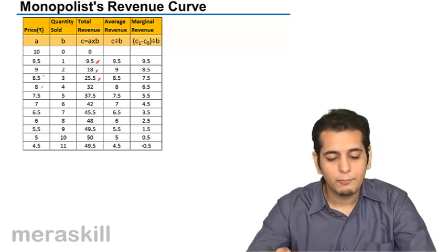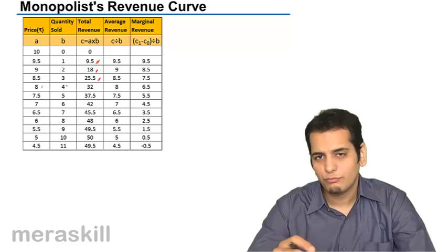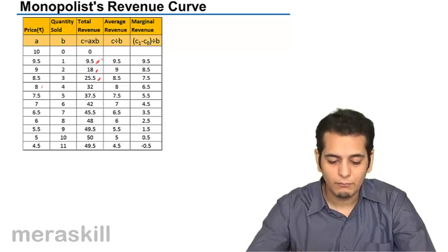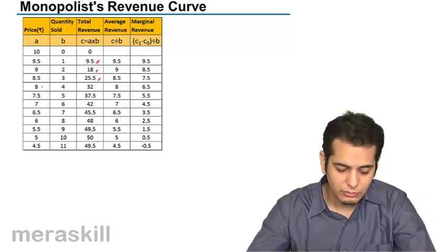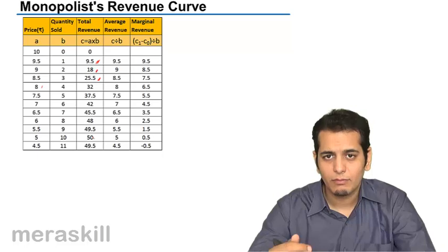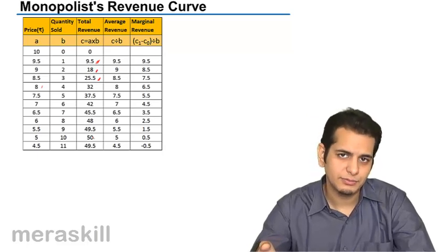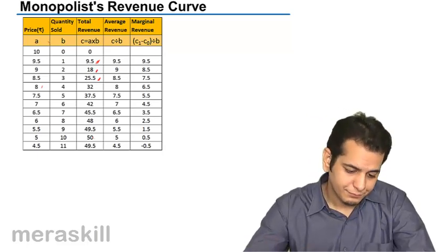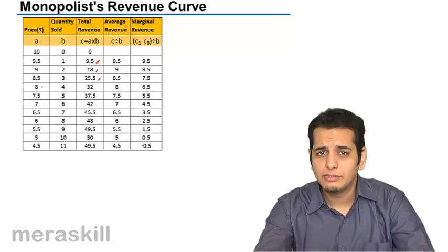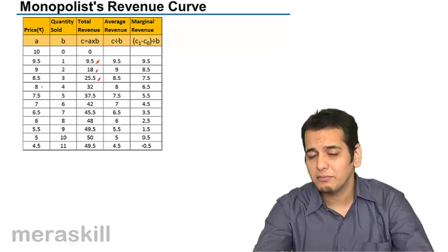If the price is decreased furthermore, he is able to sell 4 units, so the total revenue becomes 32. This continues as long as he is decreasing the price — the products he can sell increases because the law of demand applies here. Though he is the single seller in the market, that does not guarantee him that he will be able to sell all his products at whatever price he charges.